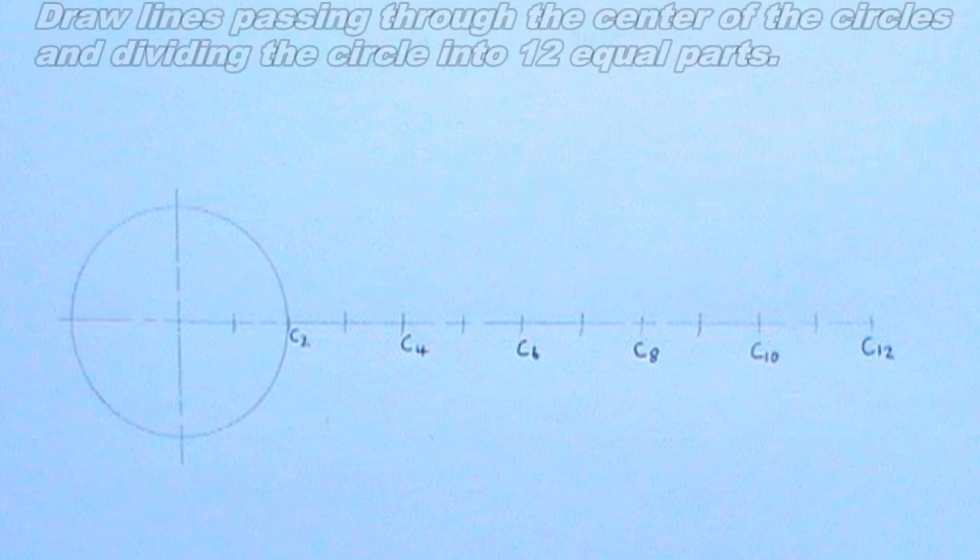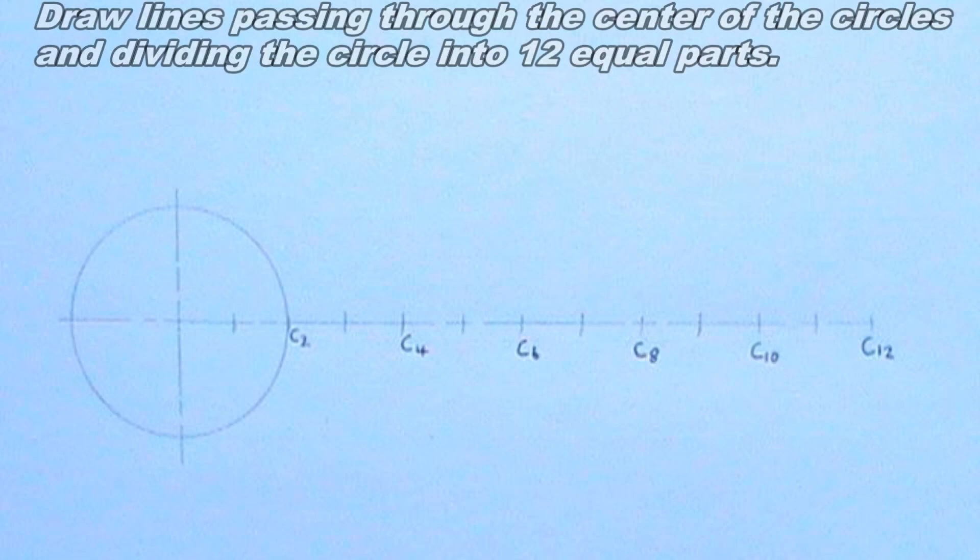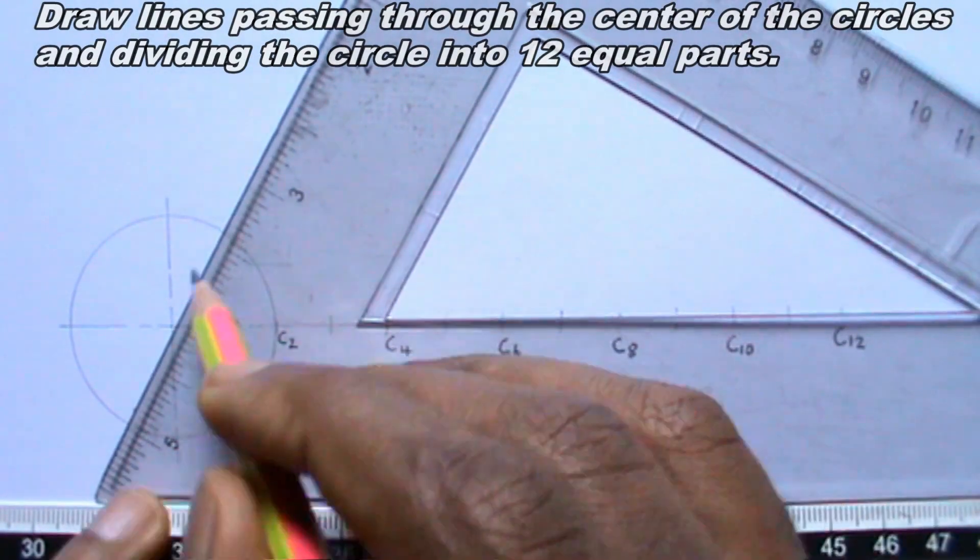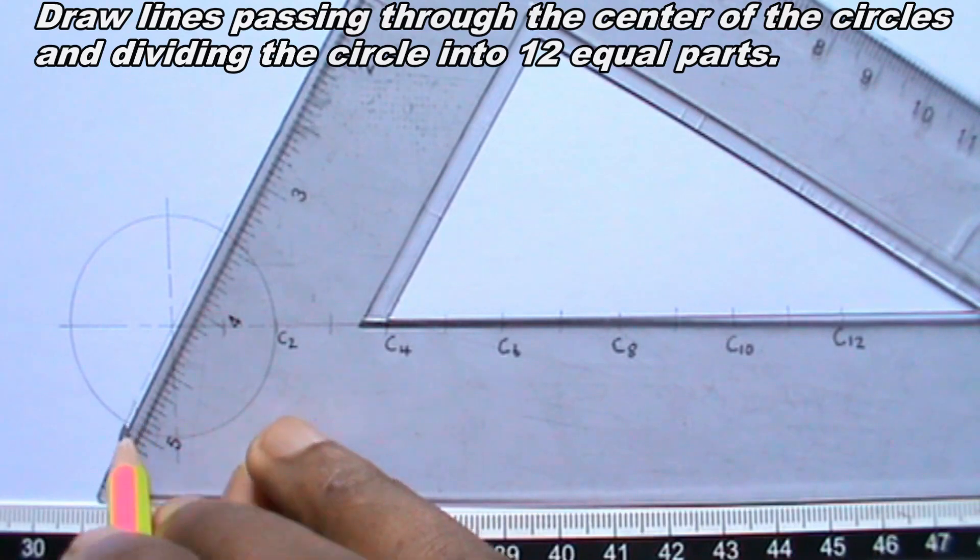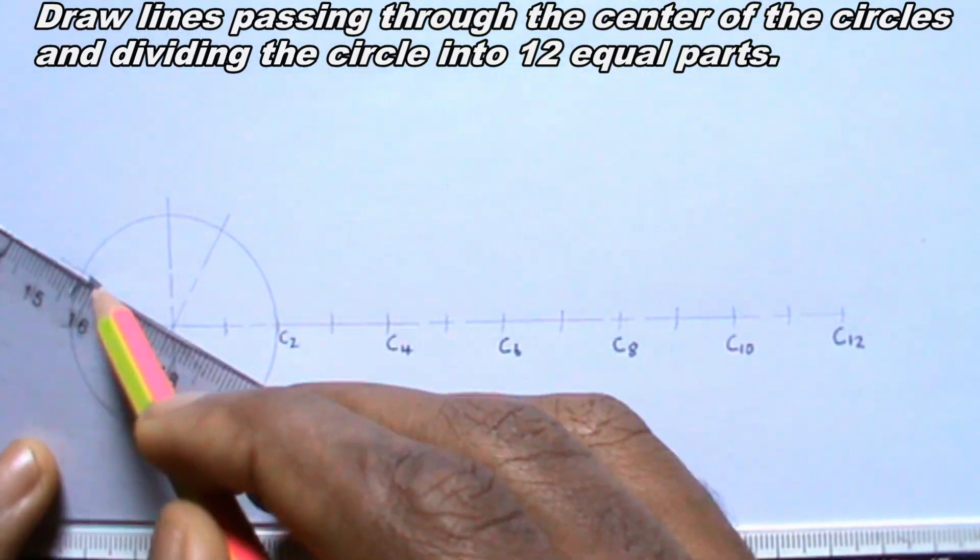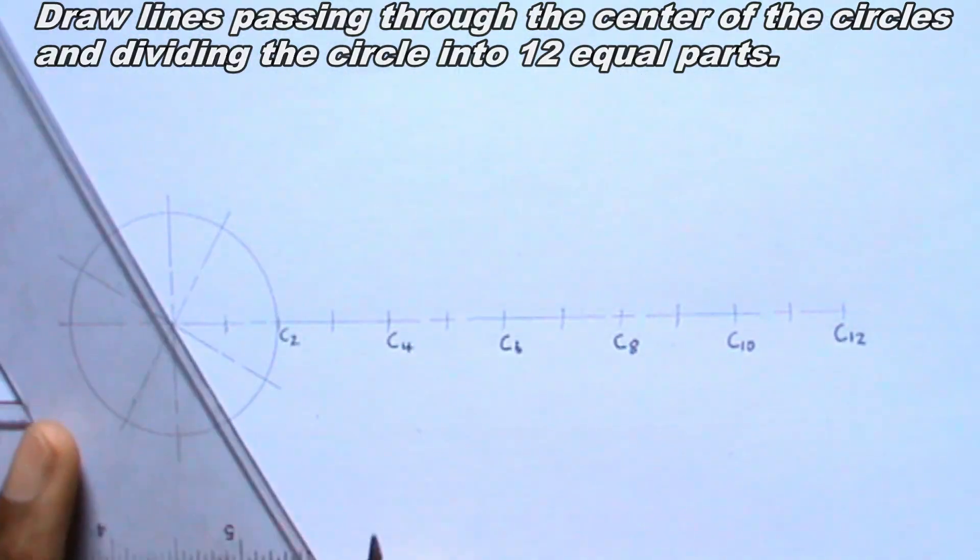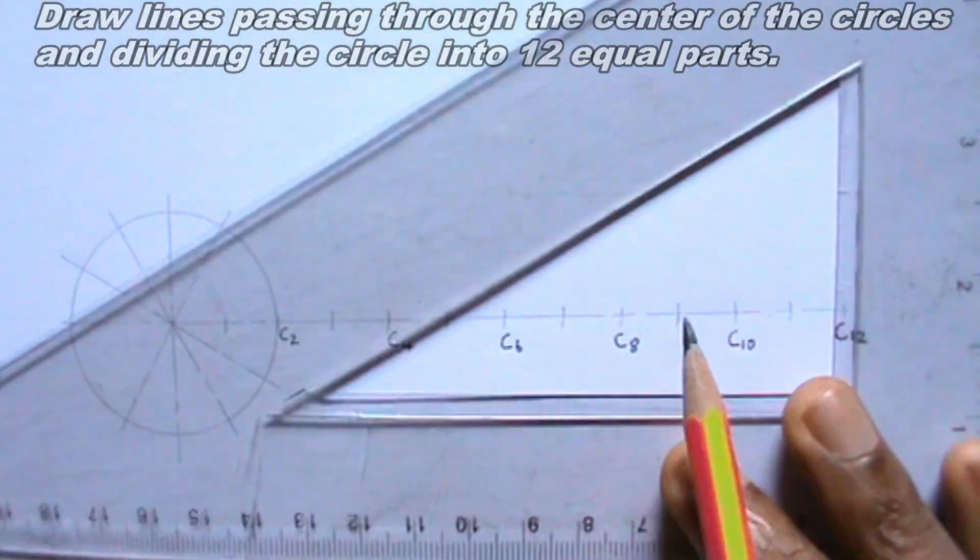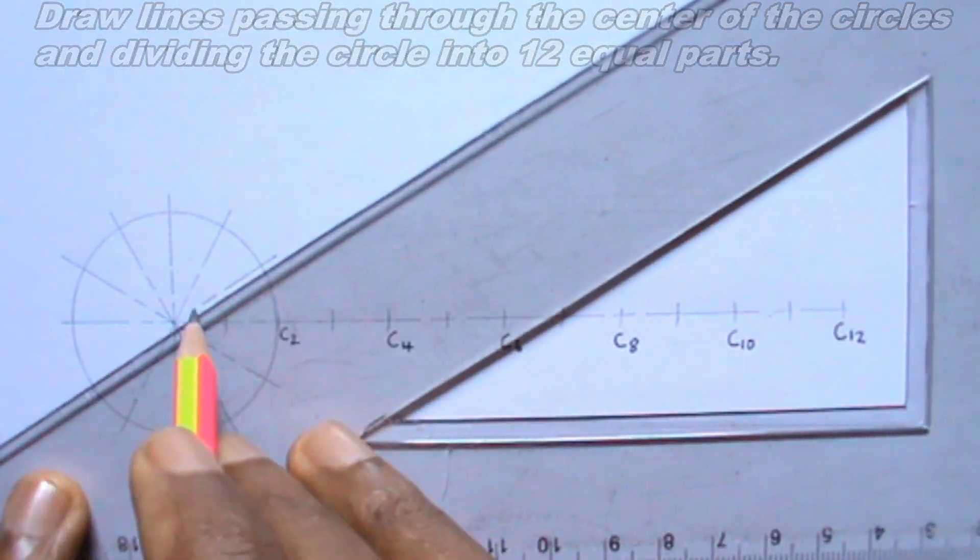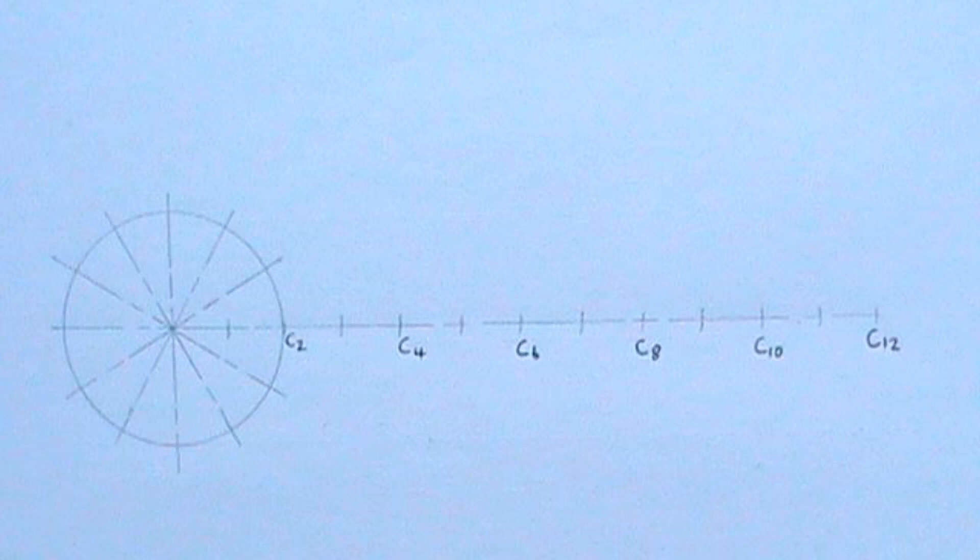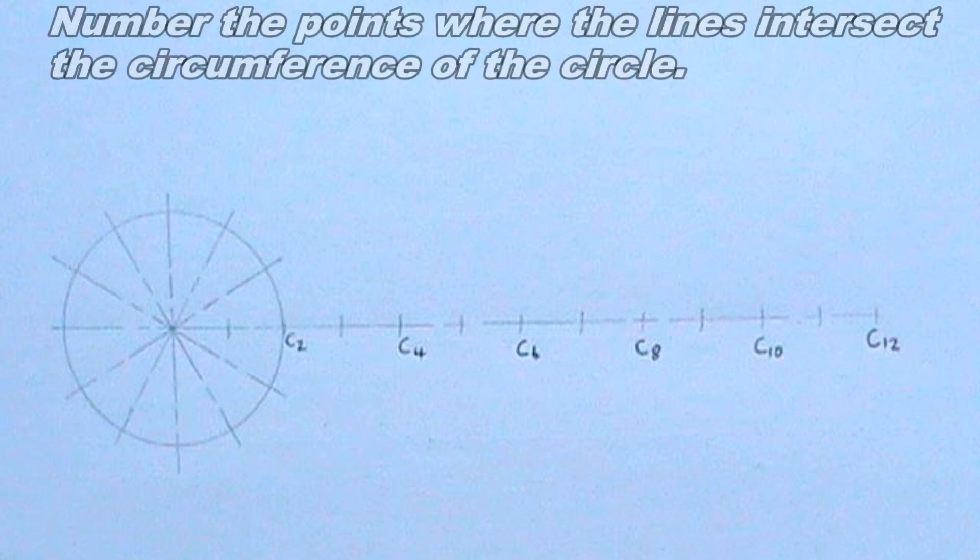Now I will draw the lines. I will mark the points where the lines intersect the circumference of the circle.